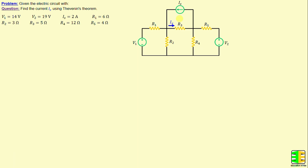Let's consider this network consisting of five resistors labeled R1 through R5, as well as two independent voltage sources V1 and V2, and one independent current source IS. The question now is to find the current IX using Thevenin's Theorem. IX is the current through the resistor R3.